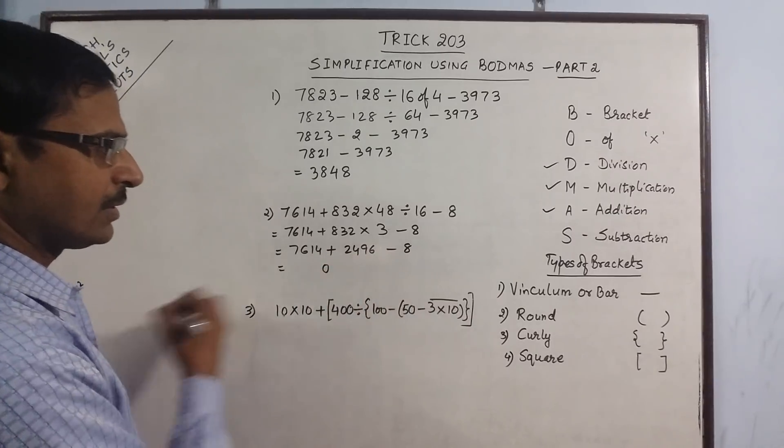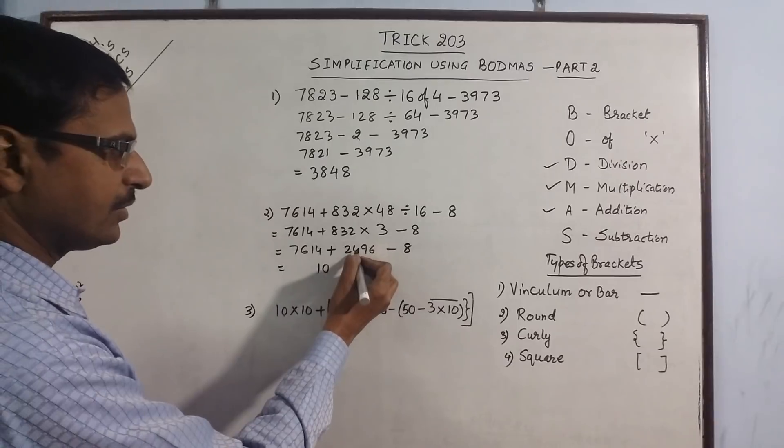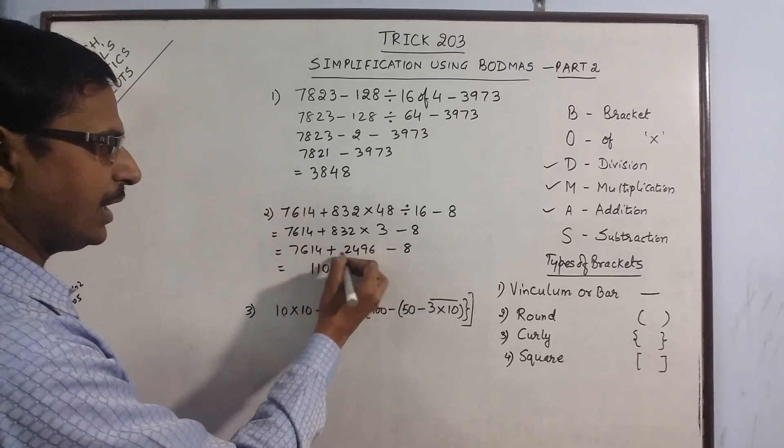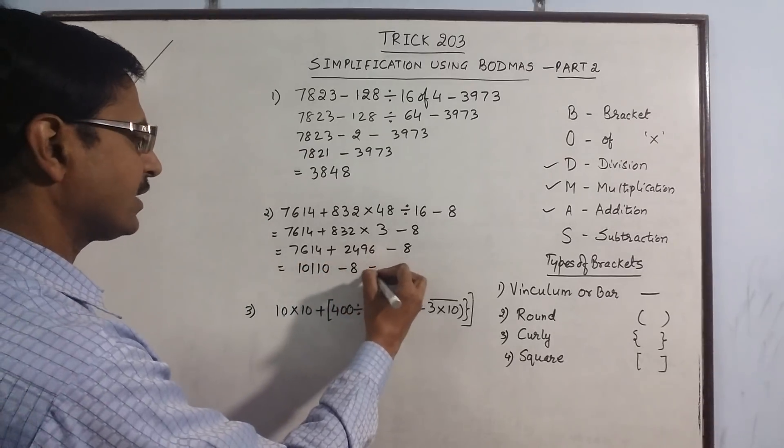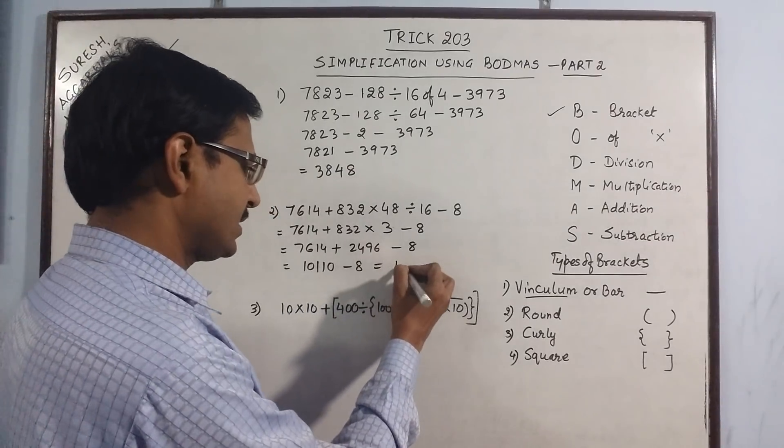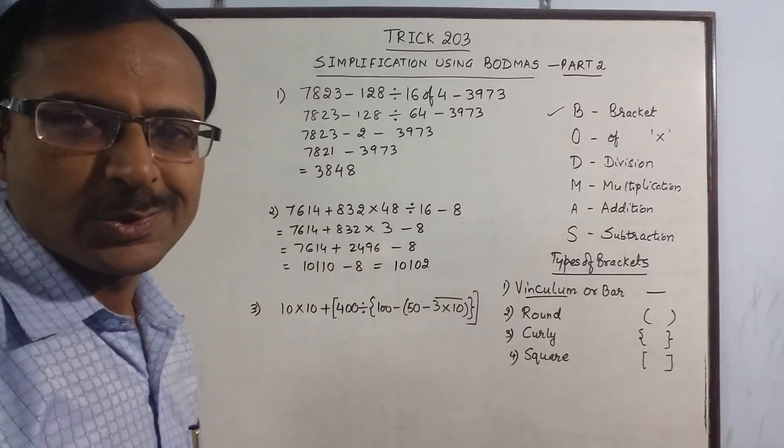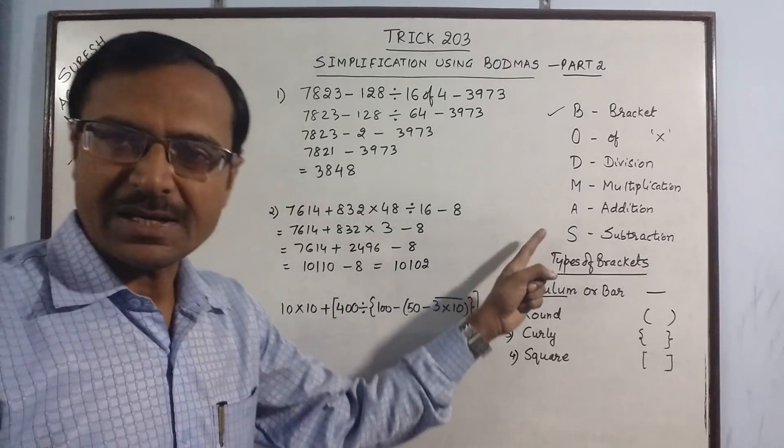And now addition. If you add this: 6 plus 4, 10, 1 carry, 10 plus 1, 11, 1 carry, 5 and 6, 11, 1 carry, and 10 minus 8. When you subtract this, 10102. This is how we solve the problems involving DMAS operations.